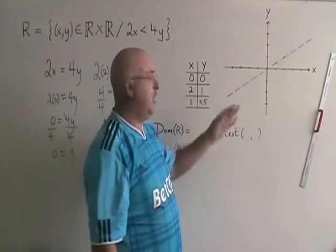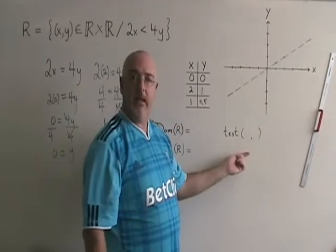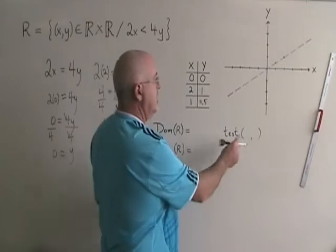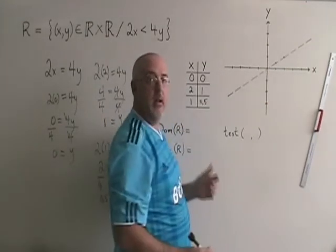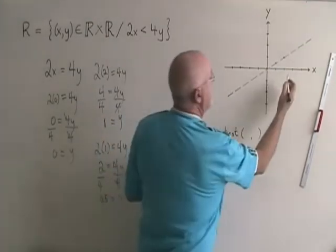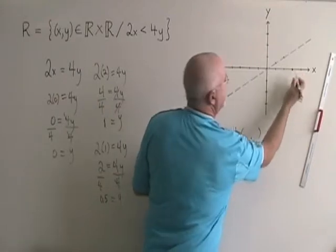Now that I have my line, I have to do my shading. I need a test point for this. I cannot choose 0, 0 as my test point because the line goes through 0, 0. So I am going to choose the point 3, 0.